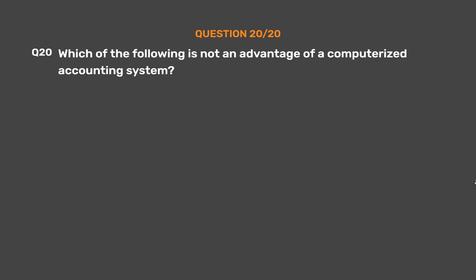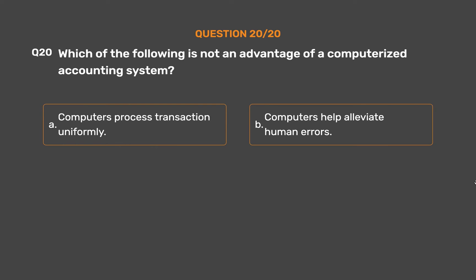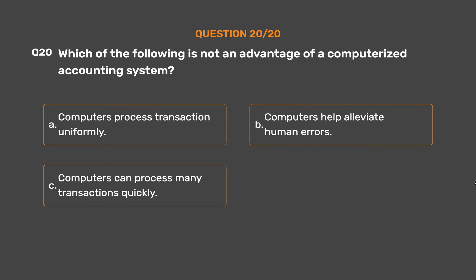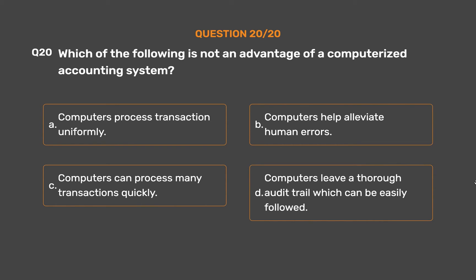Question number 20. Which of the following is not an advantage of a computerized accounting system? Option A: Computers process transactions uniformly. Option B: Computers help alleviate human errors. Option C: Computers can process many transactions quickly. Option D: Computers leave a thorough audit trail which can be easily followed.